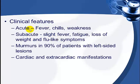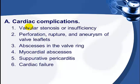Clinical features of acute endocarditis include fever, chills, and weakness. Subacute cases may present with vague flu-like symptoms such as slight fever, fatigue, weight loss, and joint pain. Murmurs can be heard in more than 90% of patients with left heart involvement. Cardiac complications include stenosis from fibrosis in subacute cases, but more commonly insufficiency or regurgitation, perforation or rupture of valves, aneurysms of valve leaflets, ring abscesses, and myocardial abscesses.